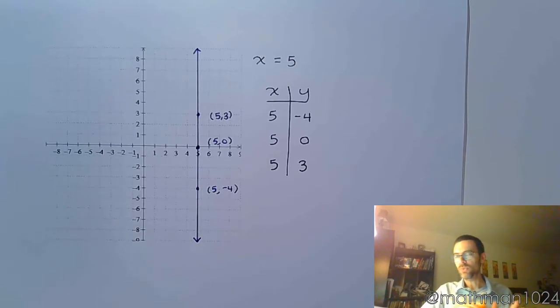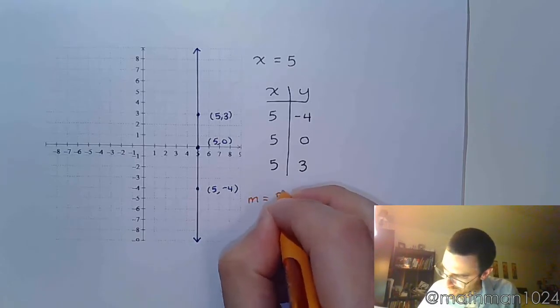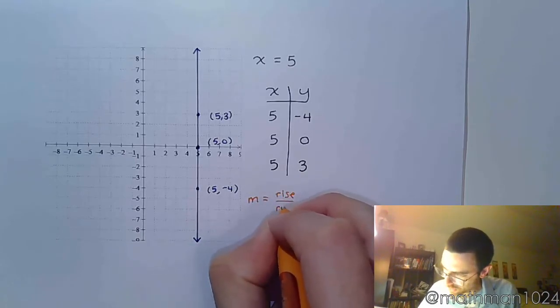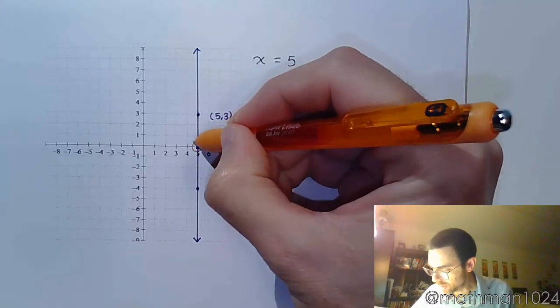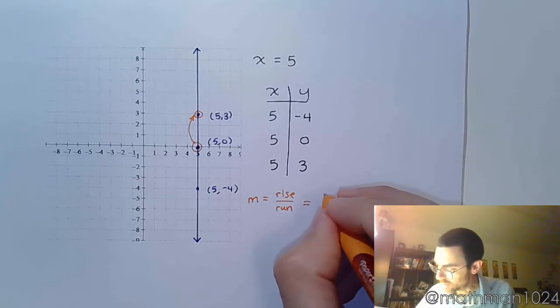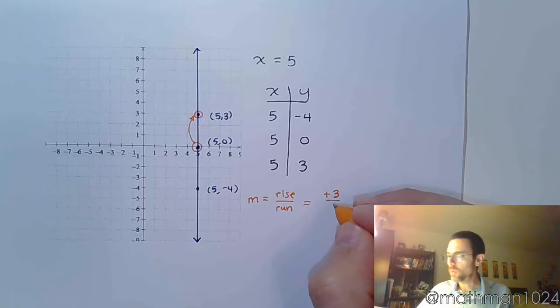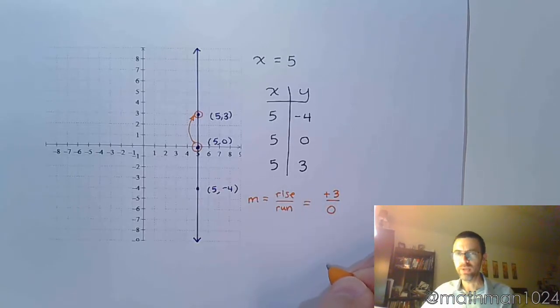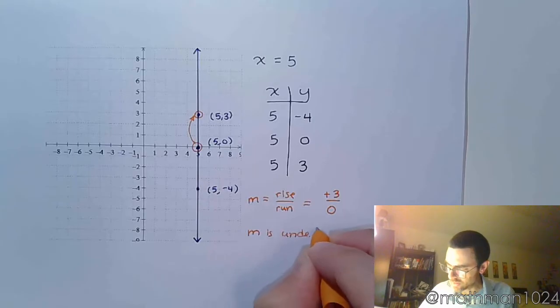Now, just like we did for the one with y, let's try to identify the slope. So again, the slope is rise over run. If I go from, let's say, this point to here, let's see what we get. My rise is up 3. My run is going to be 0 because I didn't go left or right at all. So when I, oh, wait a minute. Dividing by 0. Well, that means that my slope is undefined.